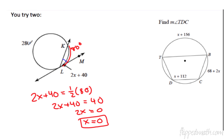First example: 280 degrees means the remainder of the circle has 80 degrees. So that arc equals 80. The angle equals half of the arc. Setting up: 2x plus 40 equals 40. Subtract 40, divide by 2, and x equals 0.